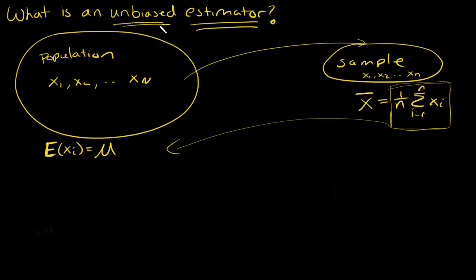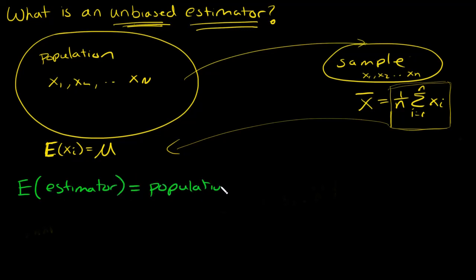So that's what an estimator is — something you calculate from the sample to estimate something about the population. Now, what does it mean to be unbiased? The definition of unbiased is that the expected value of your estimator equals the population parameter. You can have some estimators — calculations from the sample — that don't necessarily equal a population parameter, and I'll show you an example of that in a minute.